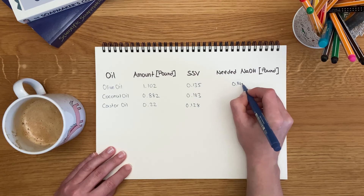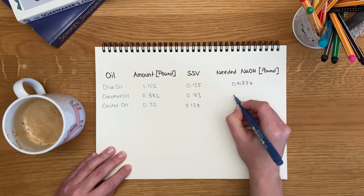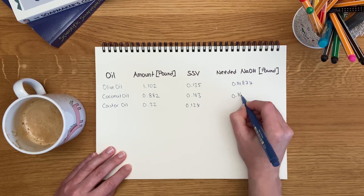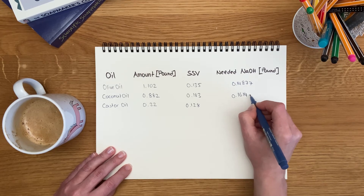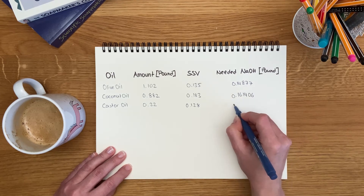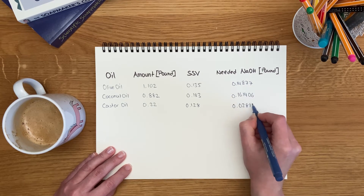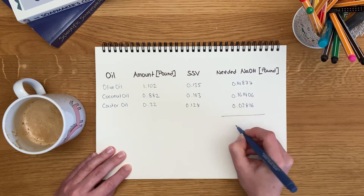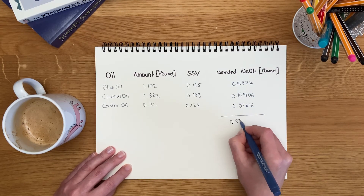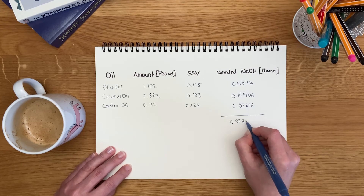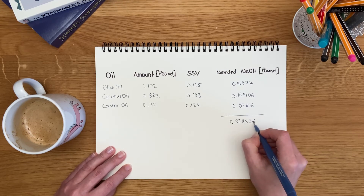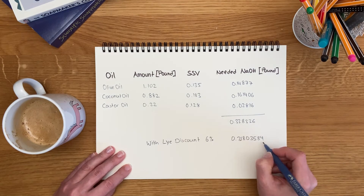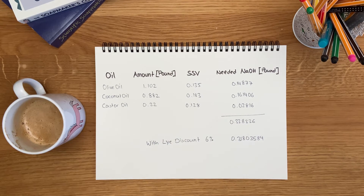Of course you can also use the saponification value for the imperial system. When you want to use pounds or ounces, use the saponification value in the same way by multiplying it with the amount of oil you want to use.